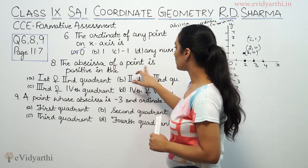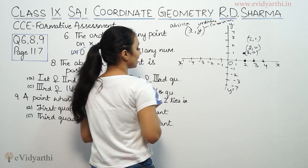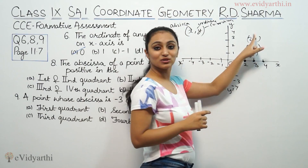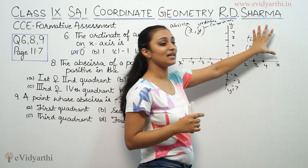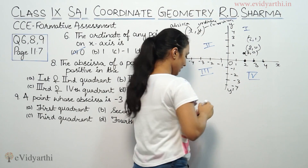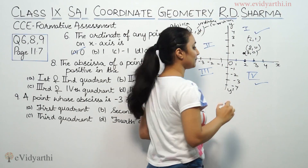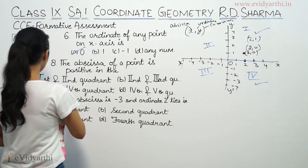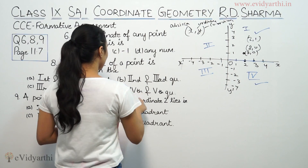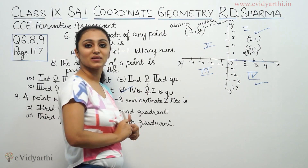Question 8: The abscissa of a point is positive. How will it be positive? The abscissa is the x-coordinate. For the x-coordinate to be positive, we look at the quadrants. This is the 1st quadrant, 2nd quadrant, 3rd quadrant, and 4th quadrant. In the 1st and 4th quadrants, x is positive. So the correct answer is the 1st and 4th quadrant.